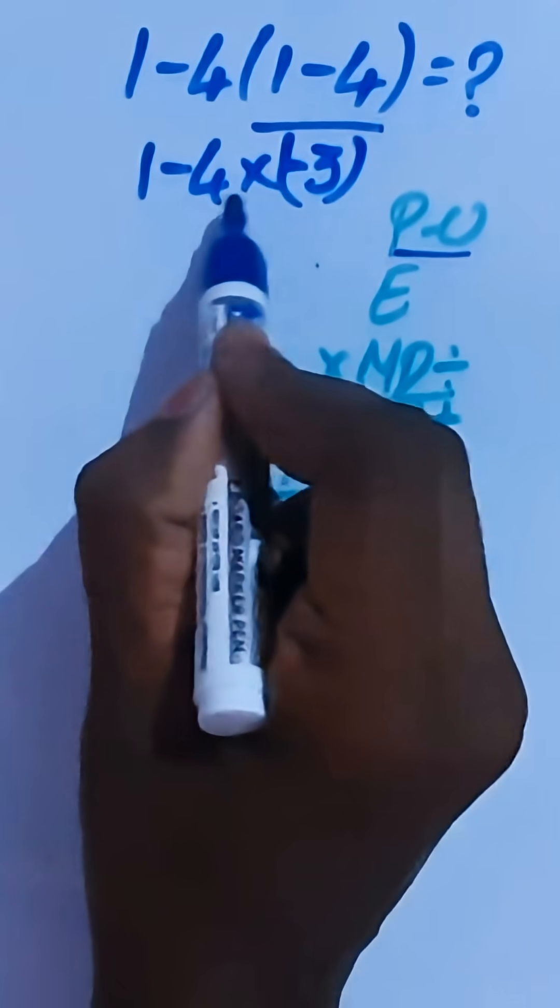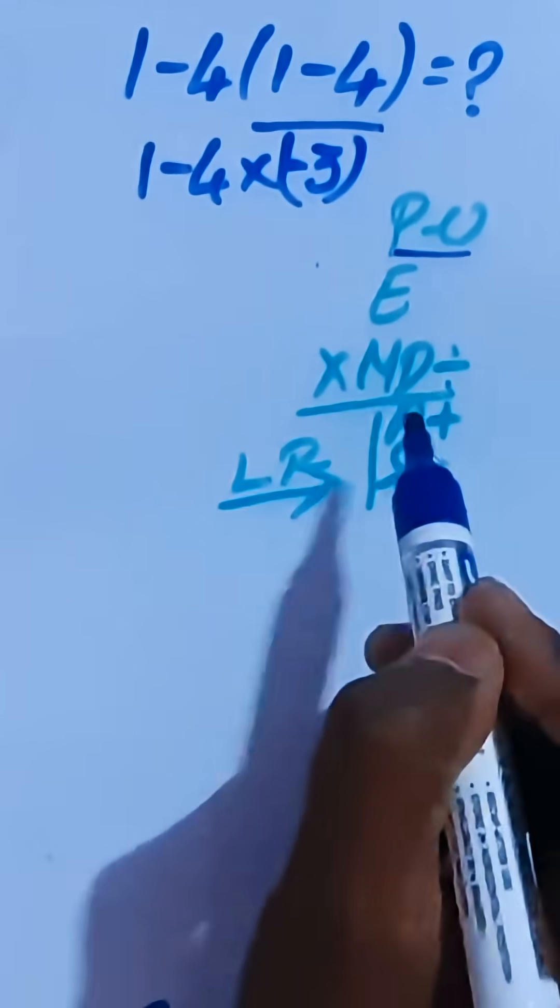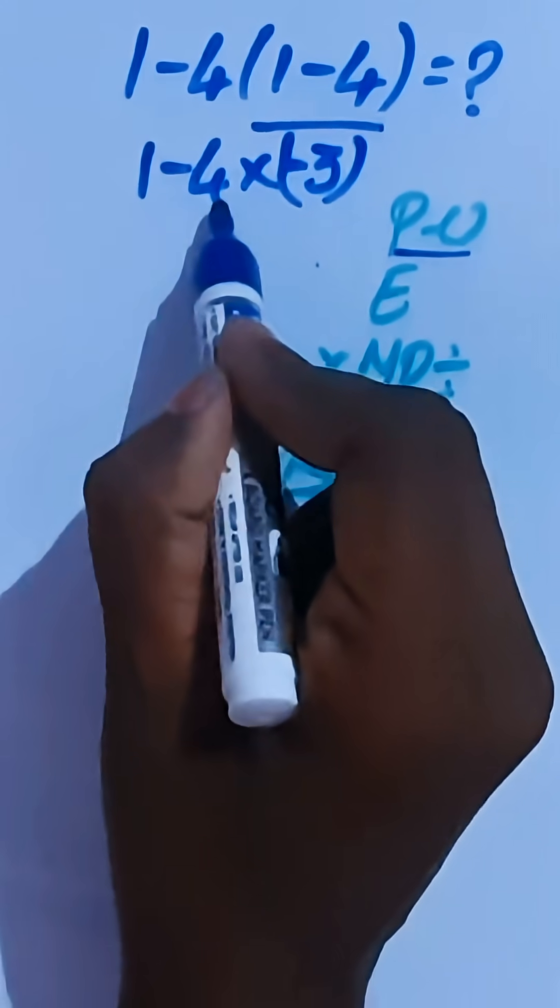Now we have subtraction and multiplication. Multiplication is higher priority than this subtraction, so we have to do this before this subtraction.